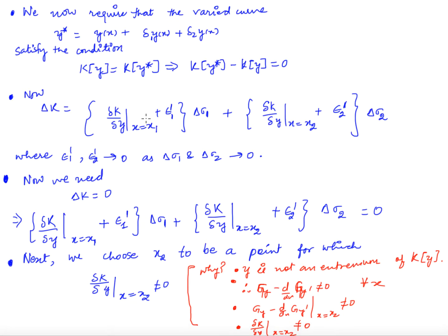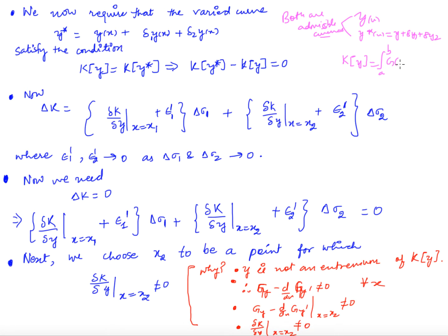Since both y(x) and y*(x) = y + delta_1(y) + delta_2(y) are admissible curves, both must satisfy the subsidiary condition. That is, K[y] = L and K[y*] = L, so the increment in K must be zero.